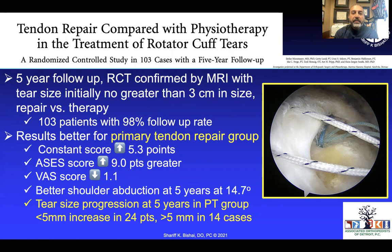Going back to tendon repair compared to physiotherapy — a five-year follow-up of confirmed rotator cuff tears no greater than three centimeters showed 98% follow-up in the primary repair group. Constant scores, ASES scores improved while VAS scores decreased. Tear progression was seen at five years in the PT group. Patients need to have these fixed — otherwise they're going to end up with bigger tears, increasing pain, decreasing motion, and the likelihood of eventually an irreparable tear.